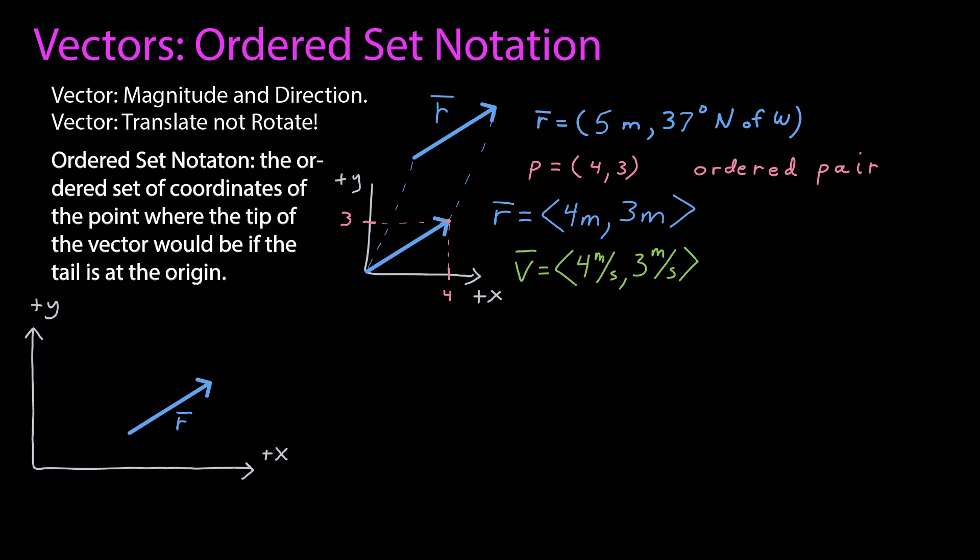It's one thing to say I'm going to translate the vector. How do you do that mathematically? If I have a vector where the tail is not at the origin, I need to find both points: the point corresponding to the tail, and the point corresponding to the tip.